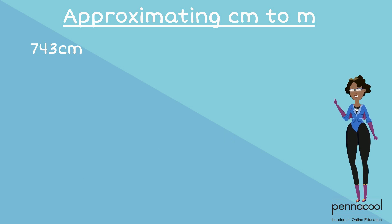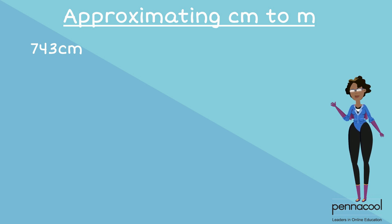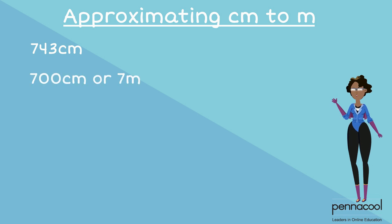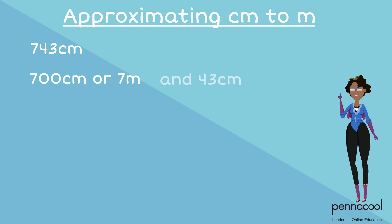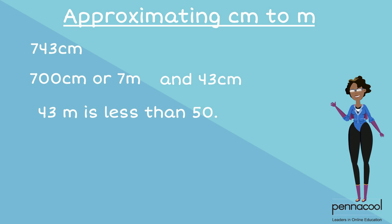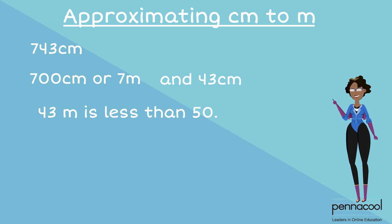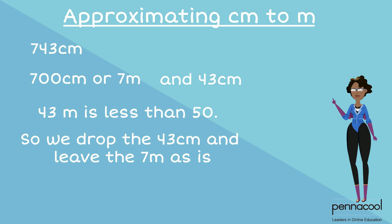Can you approximate 743 centimeters to the nearest meter? Remove the 700s, which is equal to 7 meters. We remain with 43 centimeters, which is less than 50 centimeters. Anything less than 50 centimeters, we drop the remainder and leave the 7 meters. So our final approximation is 7 meters.